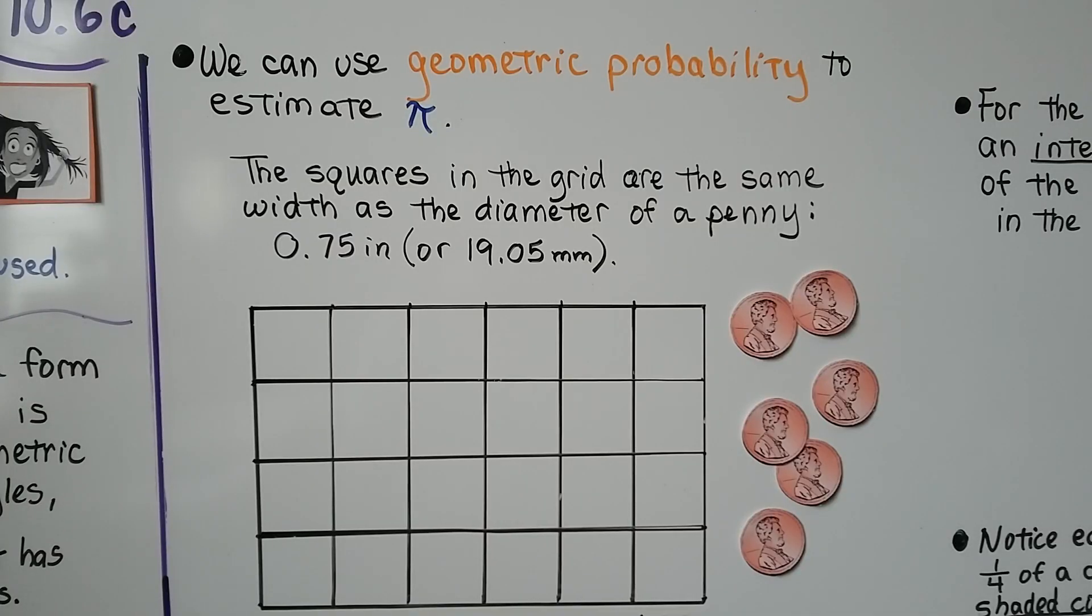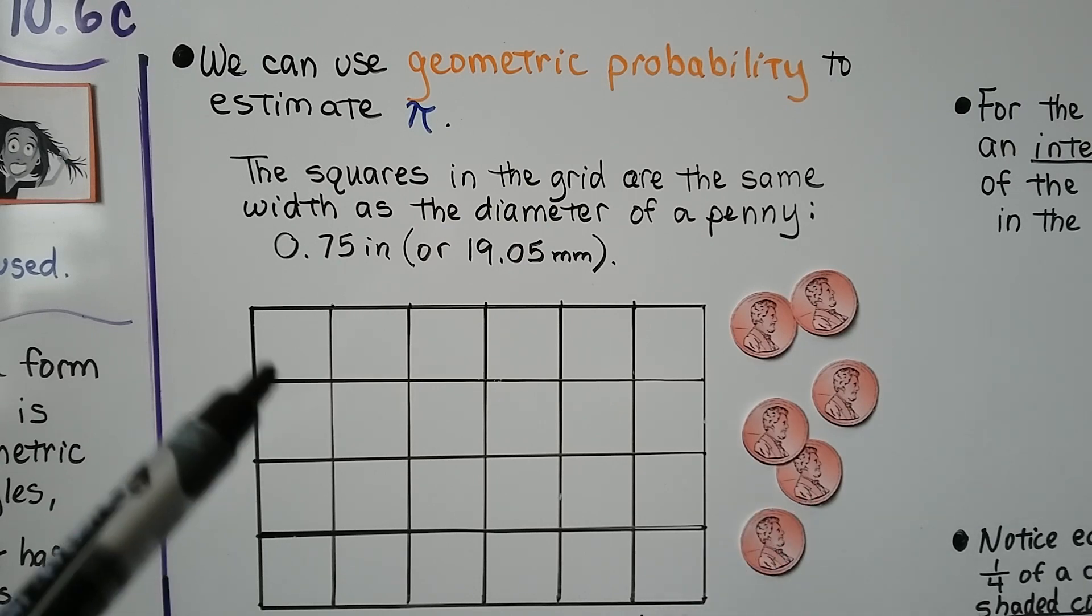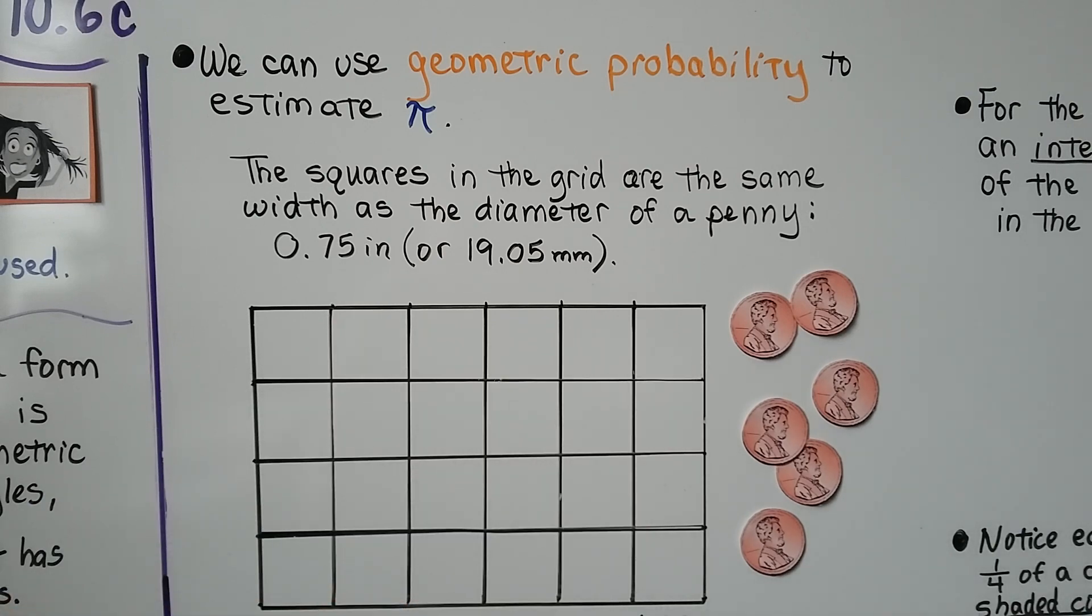We're going to use geometric probability to estimate the value of pi. So I've made a grid here, and the squares in the grid are the same width as the diameter of a penny. So a penny is .75 inches across, three quarters of an inch, or 19.05 millimeters. I've got four boxes coming down and six going across.